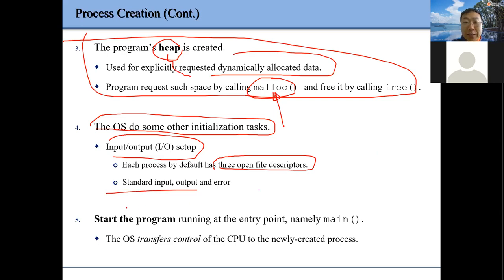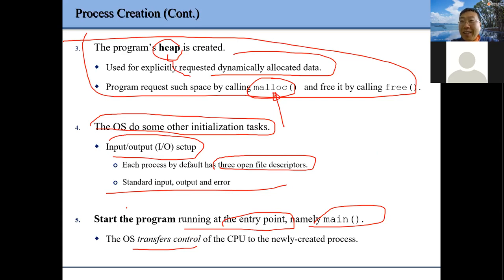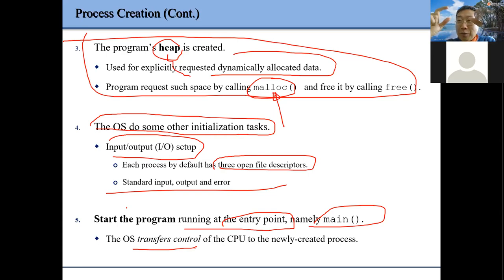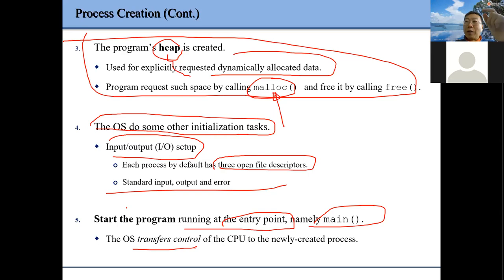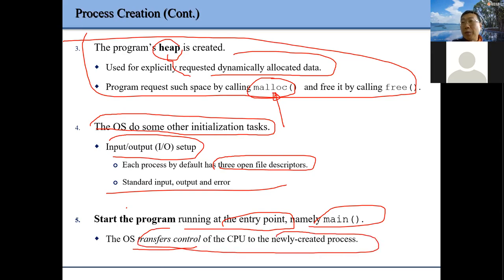After everything is set up, we go to the entry point — the starting point from our main function. We use a jump instruction to jump to that location — actually, we set up our program counter to hold the starting entry address of our program. Then the processor fetches the instruction from that starting address, and we start executing our newly created process.